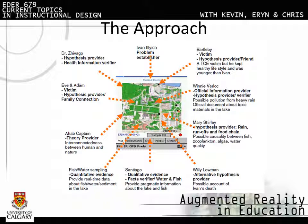You can see that some characters provide information for hypotheses, some are victims, and some provide different types of quantitative evidence to help solve the crime.